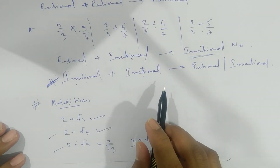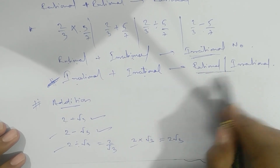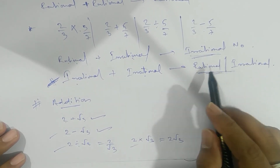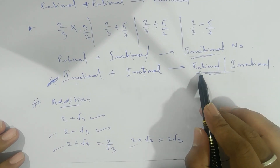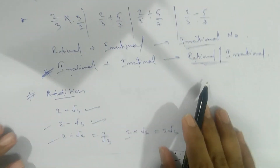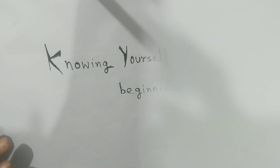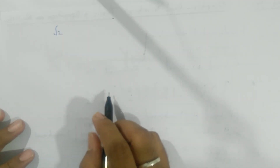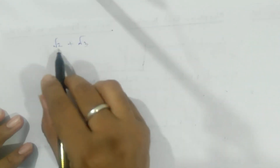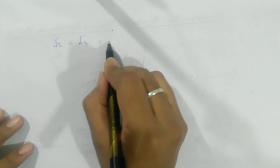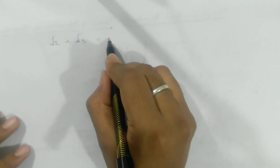But in the third case, if we choose irrational and irrational, then the result could be either — maybe rational, maybe irrational. So if we take one irrational number and another irrational number and try to add them, we cannot simplify them further; the answer would remain irrational.